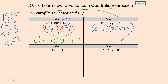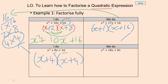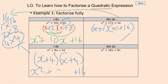Again we've still got the product of 16 but this time we want to make a sum of 8 when we add or subtract them. So which of these numbers could we use? I'm going to use x plus 4 and x plus 4. So I'll get x squared plus 4x plus 4x plus 16, and 4x plus 4x combined together gives me 8x.